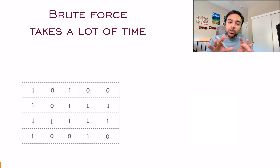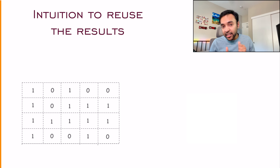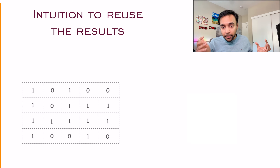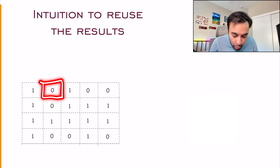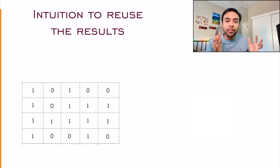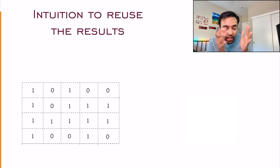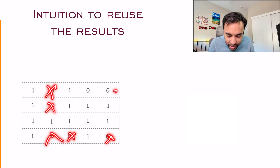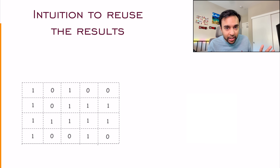We need to approach this problem very efficiently. There are a few pointers to get started. There are only two possibilities — either a zero or a one. As soon as you see an element zero, it simply means that you cannot have a square there because you need a square with all ones. So I can simply rule out all zero elements — they are not relevant.